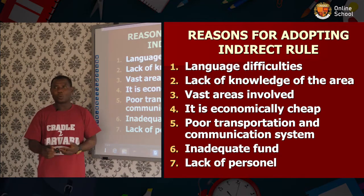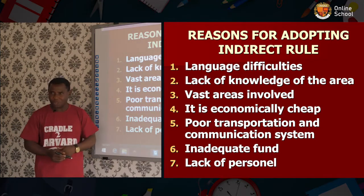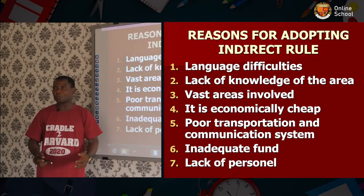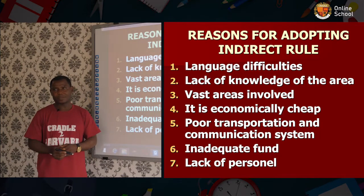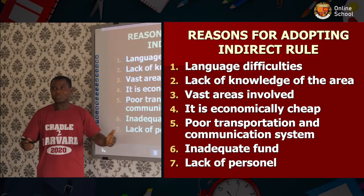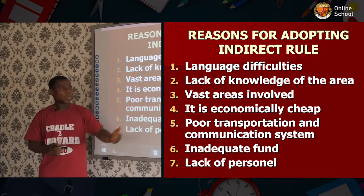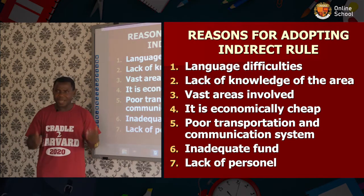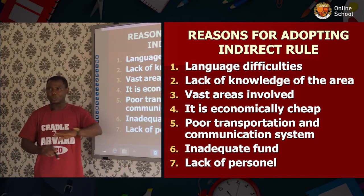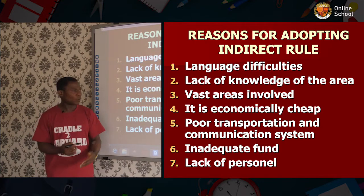They were not familiar with some areas in Nigeria, and because of that the only way they could manage was to make use of people already on the ground — people used to those areas. Reason three: the vast areas involved. Nigeria is large, and because the area they were supposed to cover was vast, the only way to cover it was to make use of all the traditional rulers, while they supervised and guided them on what to do.